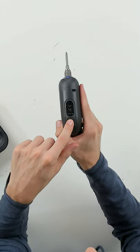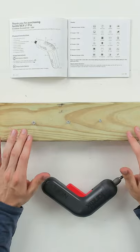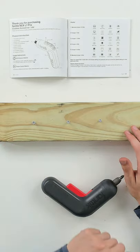We have our torque settings right here. One is the lowest setting, and we can go all the way up to six. Now I got a wood board right here and three screws in place. We're going to test out those torque settings so you can see what it's like.